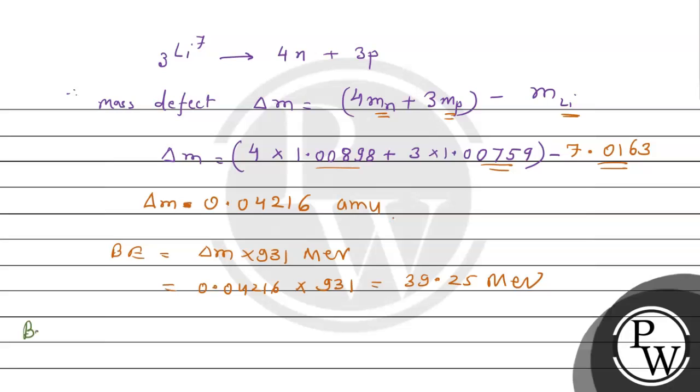Now calculating binding energy per nucleon: the nucleon number is the atomic mass, so binding energy divided by A. For lithium A is 7, so 39.25 divided by 7 equals 5.6 MeV.